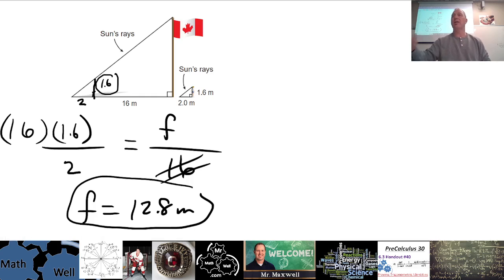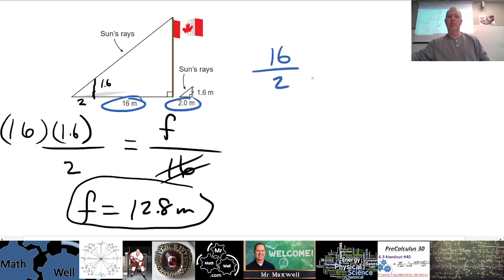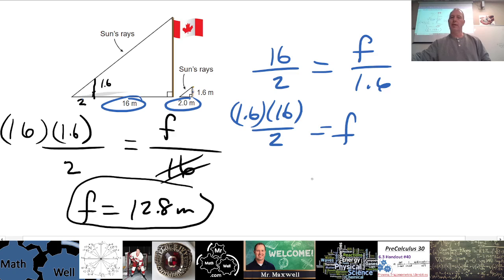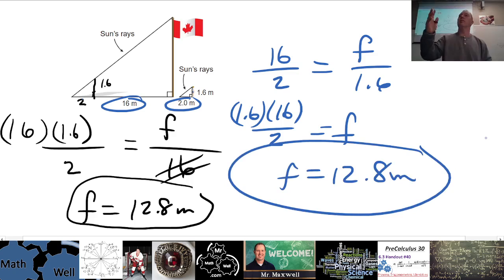All right. So another way you could do that, I'll just show you that second method, where you take corresponding parts of the corresponding, or of the similar triangles. Very much the same as this one, but a little bit different. So what we could do is we could go 16 here, divided by 2. You could do that one first, 16 over 2, equals, from the big triangle, that's flagpole height over 1.6. And you end up getting the exact same answer doing it this way. Okay, F would be 12.8.